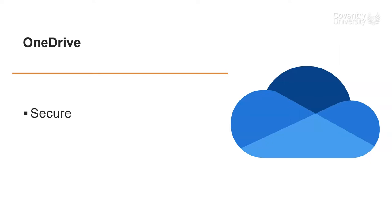Another good thing about keeping your documents in the cloud is that they're backed up. It's much safer than storing your work or your assignments on a USB stick, because every year people always lose USB sticks or it gets corrupted or something. Much easier if you keep it in the cloud. And if something goes wrong with your document or you mess it up, you can actually return it to a previous version in OneDrive — it keeps the versions of your documents so you can go back if you wish.